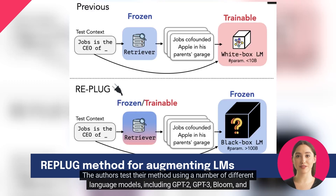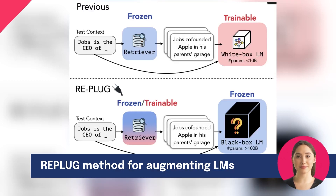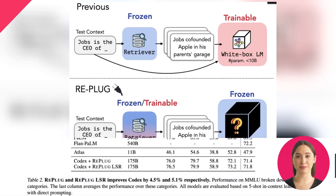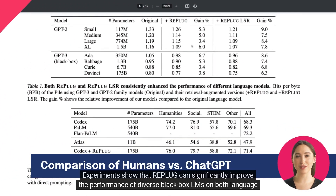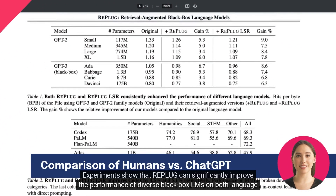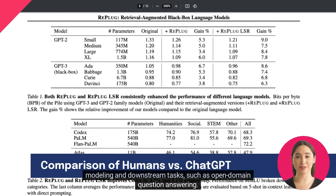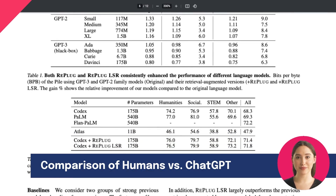The authors test their method using a number of different language models, including GPT-2, GPT-3, Bloom, and Codex. Experiments show that Replug can significantly improve the performance of diverse black box LLMs on both language modeling and downstream tasks, such as open domain question answering.